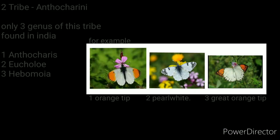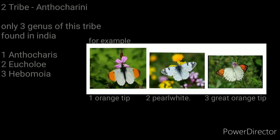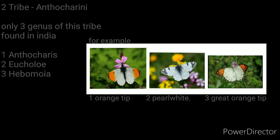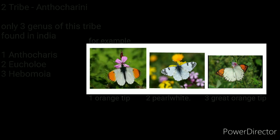The second tribe has nine genera and only three of them are found in India. For example, the Orange Tip from genus Anthocharis, the Pearl White from genus Eucolia, and the Great Orange Tip from genus Hebomia.